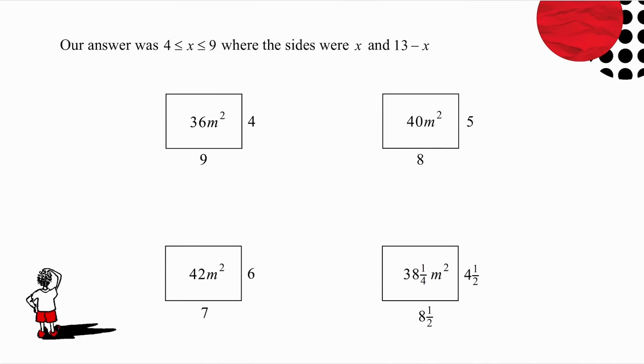What about if I have x to be 5? My other side is 13 minus 5, and my area is 40, which is at least 36. If my side is 6, the other side 13 minus 6, area 42. That's fine.